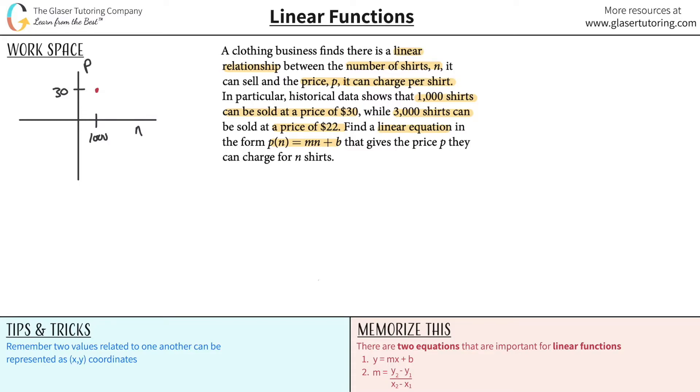Now we have another point - it says 3,000 shirts can be sold for a price of $22 per shirt. So now if I go out to 3,000, somewhere over here, the price has now dropped down to 22. You might say how does that make sense? Well remember it's a cost per shirt. You've seen examples of this in everyday economics - the more you buy of something, usually the price per item will go down.